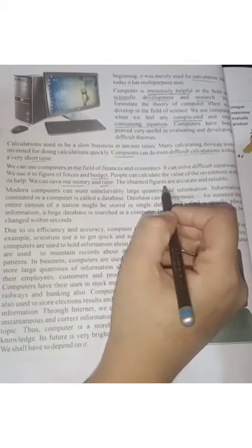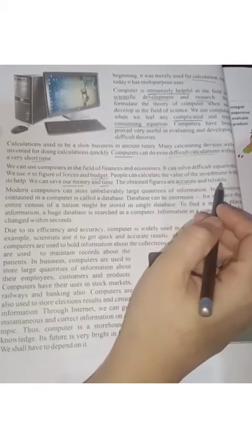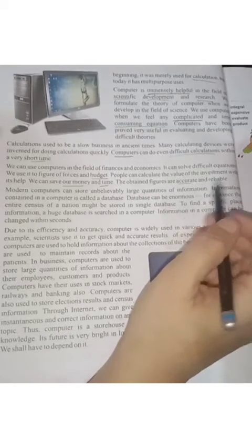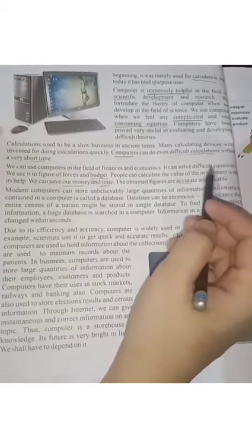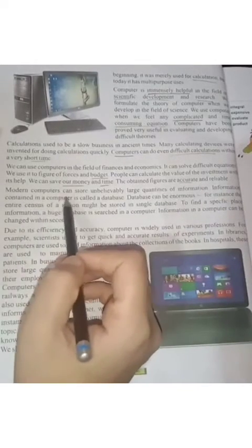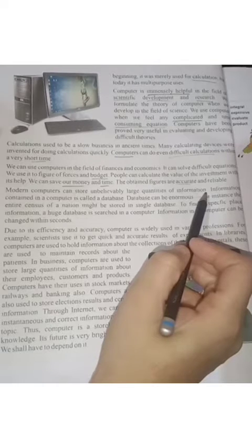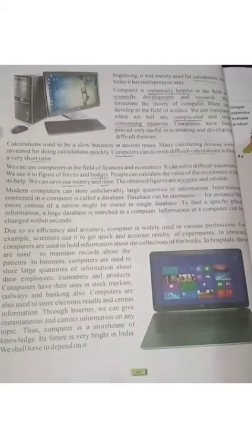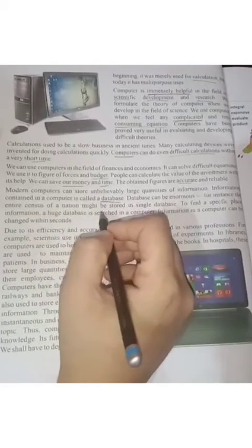Because we are doing our calculations with the computer, the results will be accurate — completely correct — and reliable. Whatever figures I enter into the computer, those results will come out. If I type something wrong, the calculation will also be wrong — so we cannot blame the computer. Modern computers can store unbelievably large quantities of information. The information contained in a computer is called a database.